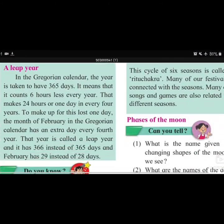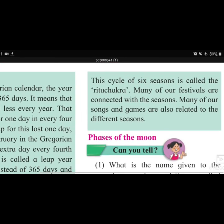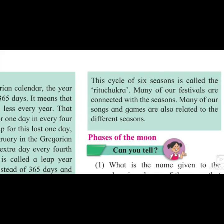This cycle of six seasons is called Ritu Chakra. If the question asks you what is Ritu Chakra, you should answer: the year is divided into six seasons — Vasanth, Grishma, Varsha, Sharath, Hemant, and Shishir — and this cycle of six seasons is called Ritu Chakra.